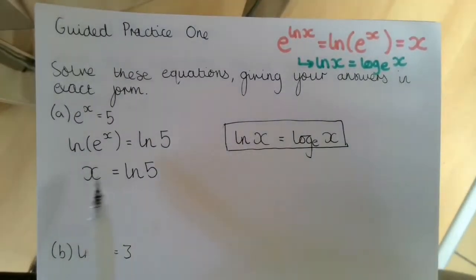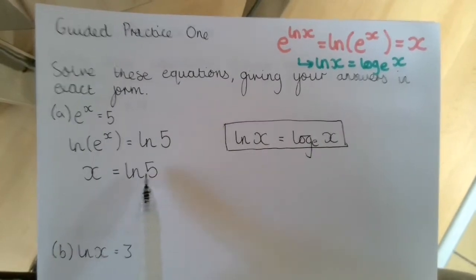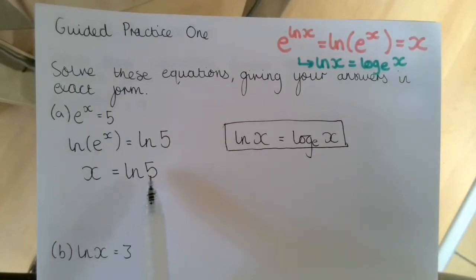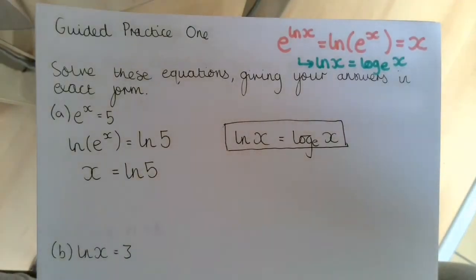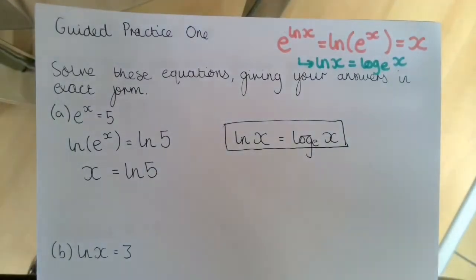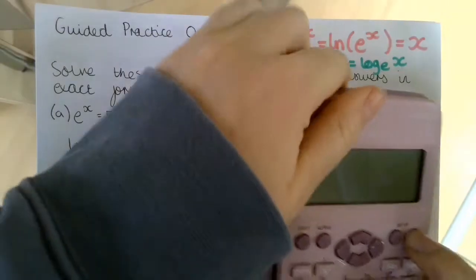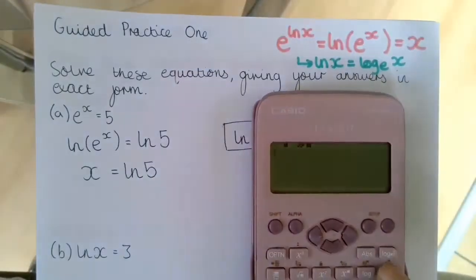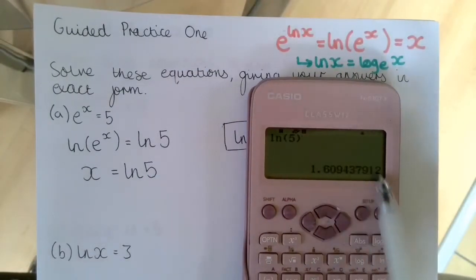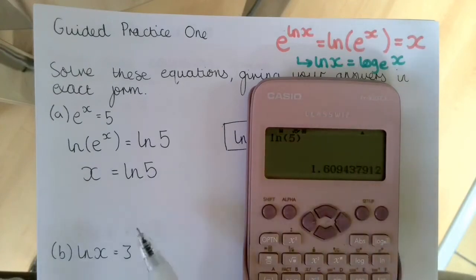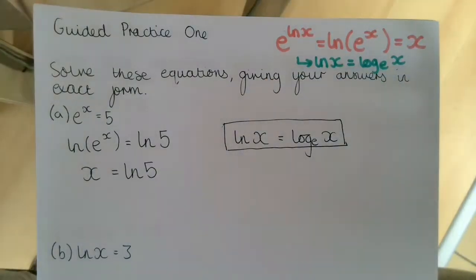So x equals the natural logarithm of 5, and that is an answer in exact form. If we typed that into our calculator — ln 5 — we'd get a decimal number, but we're not going to round it; we're going to leave it in its exact form.